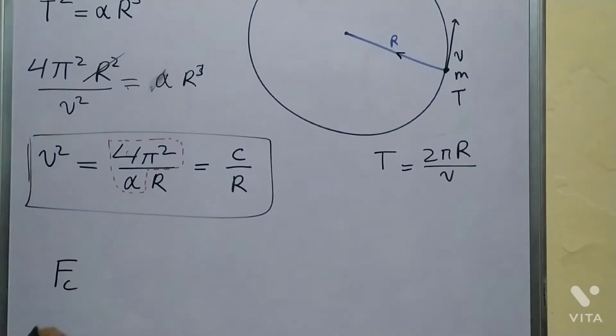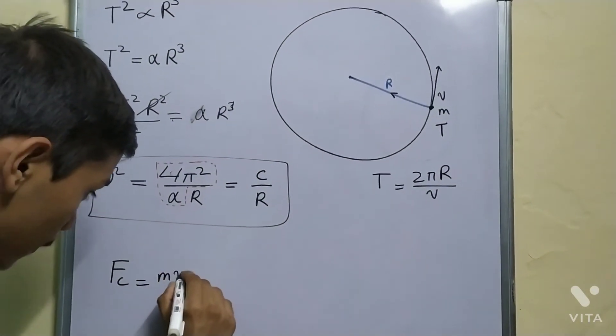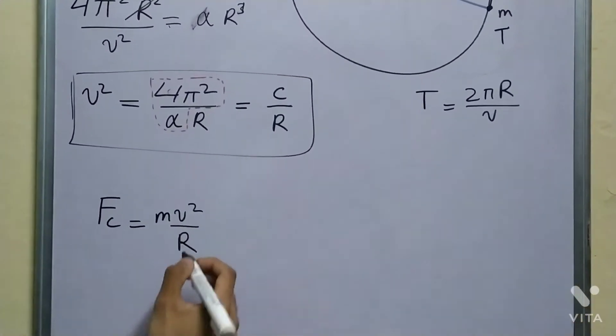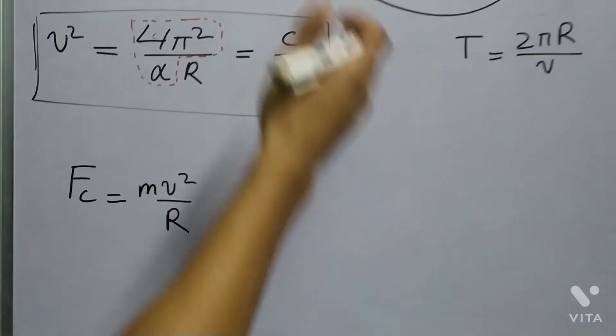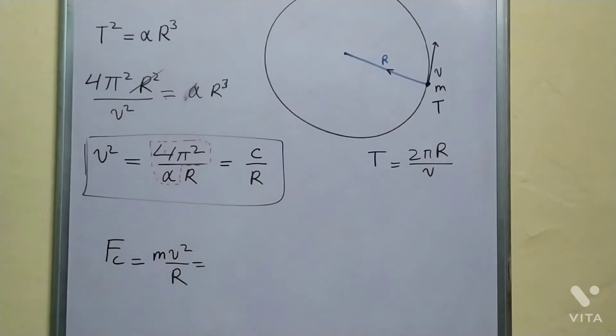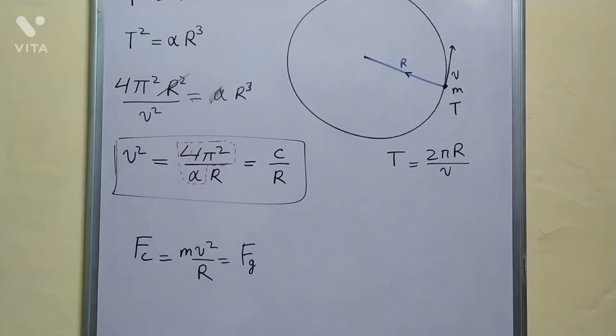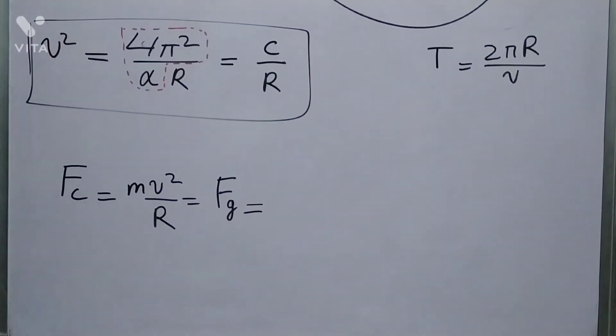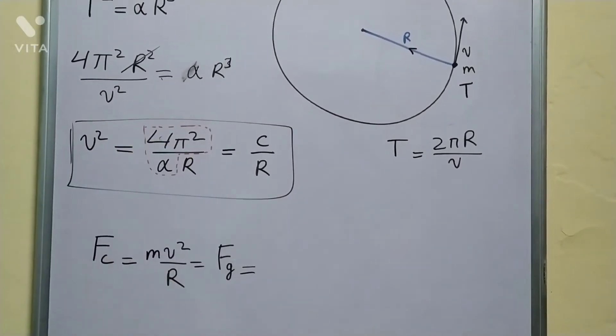So the centripetal force is given by m v² upon r—v is the velocity (speed) and r is the distance from the center—and this is provided by the gravitational force between the two objects. So this is equal to Fg, and we just plug in the term for v².